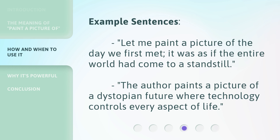Example Sentences: 'Let me paint a picture of the day we first met — it was as if the entire world had come to a standstill.' 'The author paints a picture of a dystopian future where technology controls every aspect of life.'